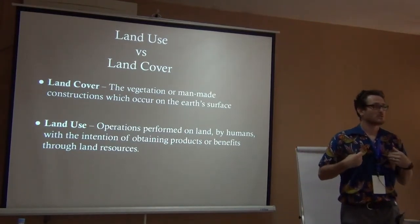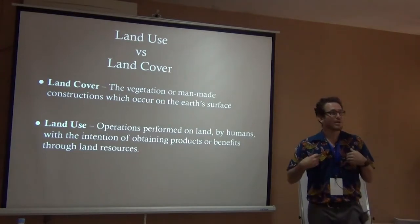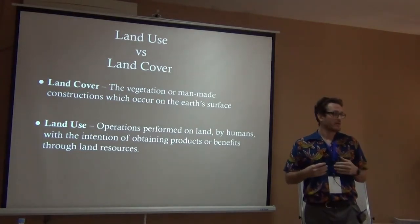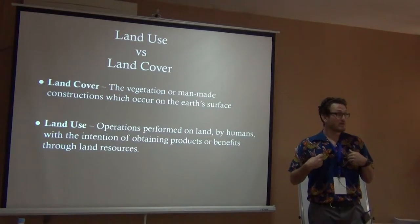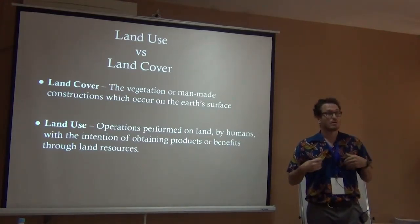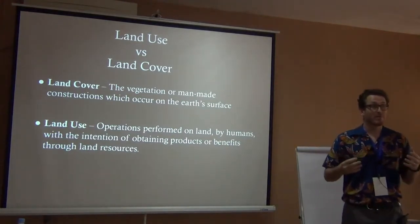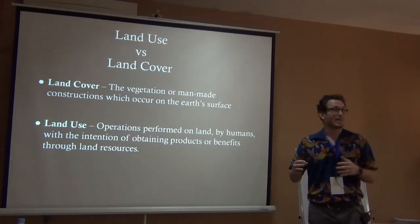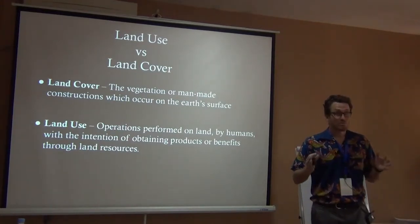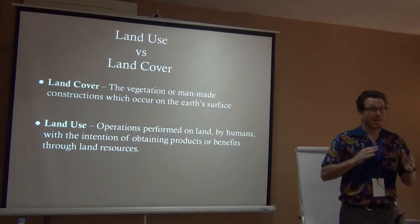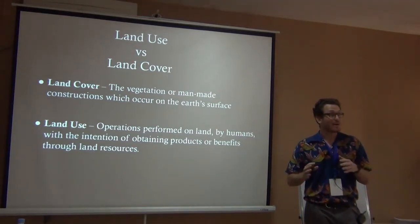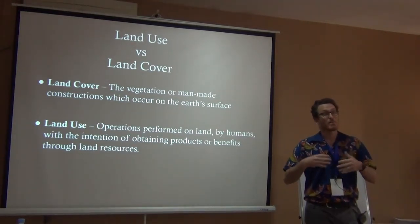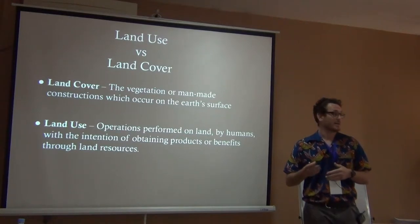So what are the ways that we are actually using the land? It could be a forest that we're using, it could be agriculture, it could be a settlement. That's land use. Oftentimes what we really see is a mix between the two — maps and data that are actually a mix of both land cover and land use.